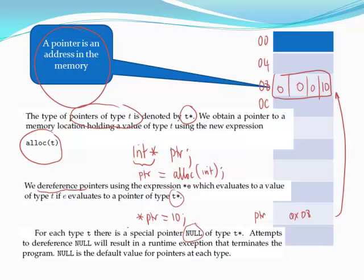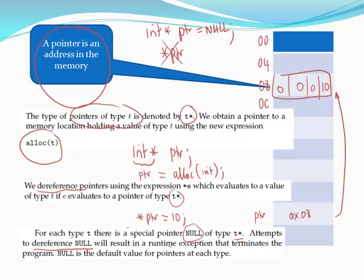There is a special pointer type called null, which is of type T*. You cannot dereference null. For instance, you should always make it a practice to assign null to a pointer if you don't have memory allocated yet. If you try to dereference a null pointer, this would cause what's called a runtime exception and it will terminate the program. So it's a good contract to ensure that before you dereference any pointer, you must have a pointer that is not equal to null.